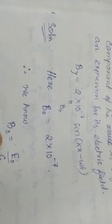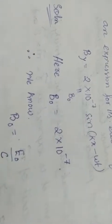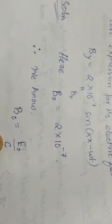So we know B0 is equal to E0 by C, or E0 by B0 is equal to C. C means speed of light.